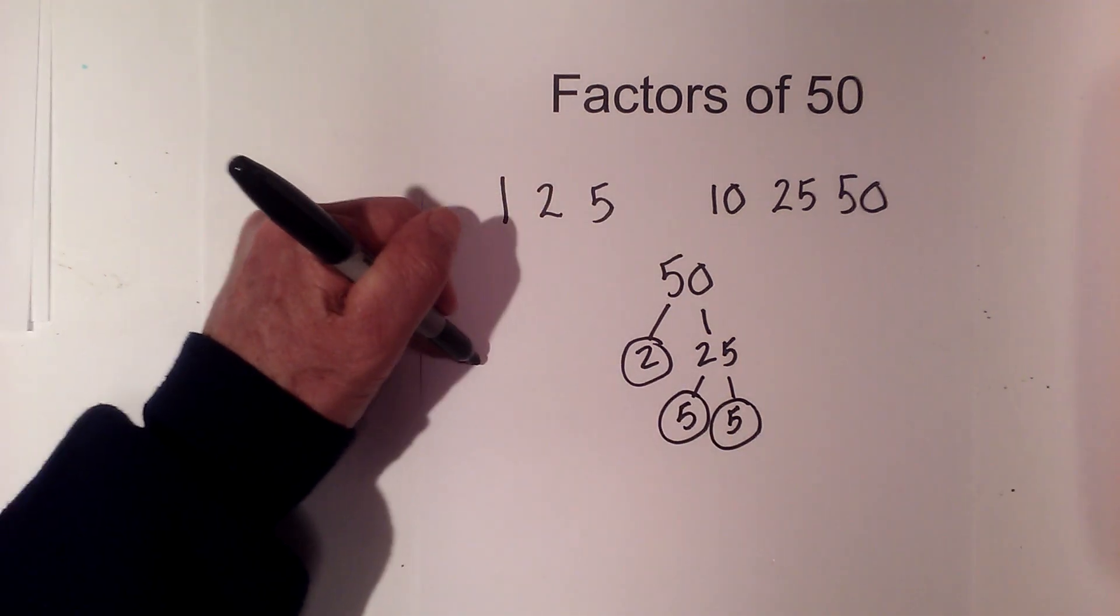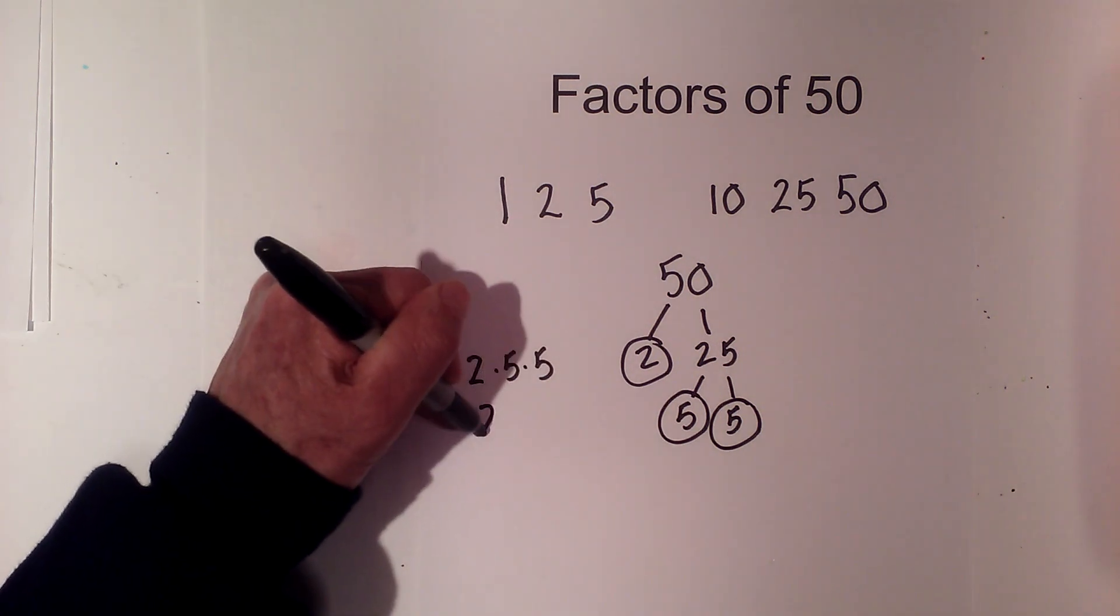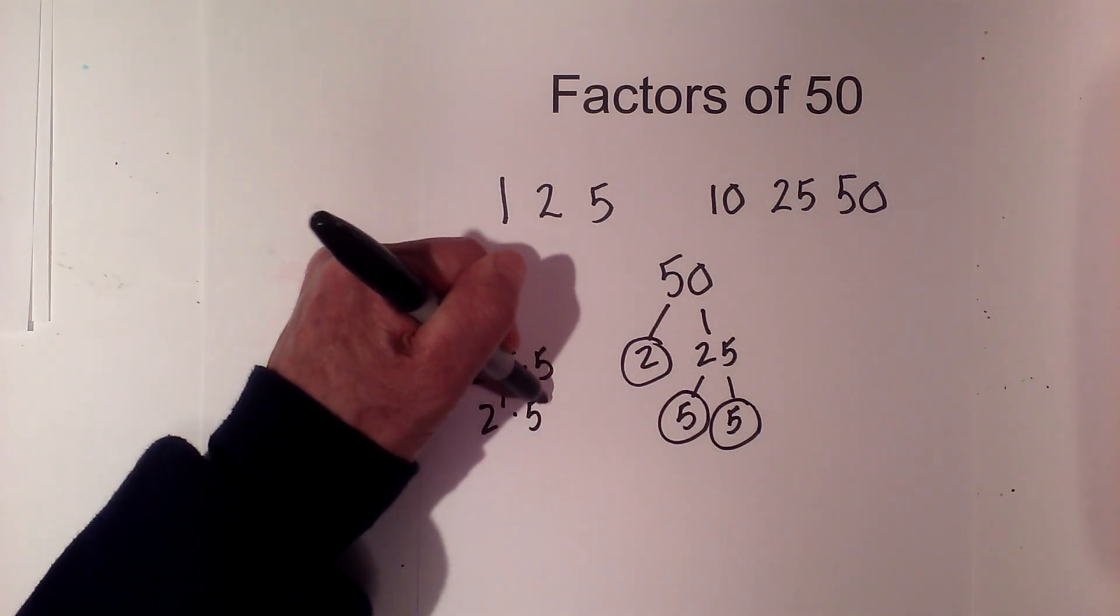So we have 2 to the first times 5 squared.